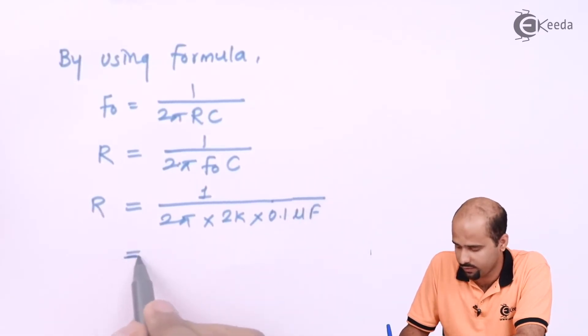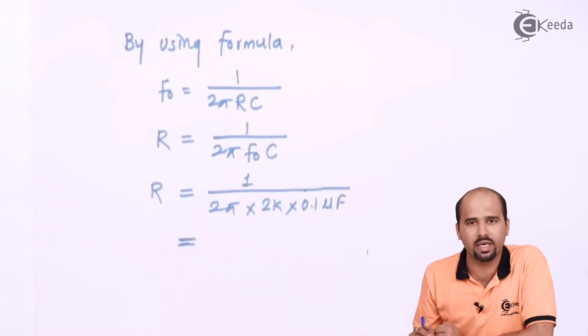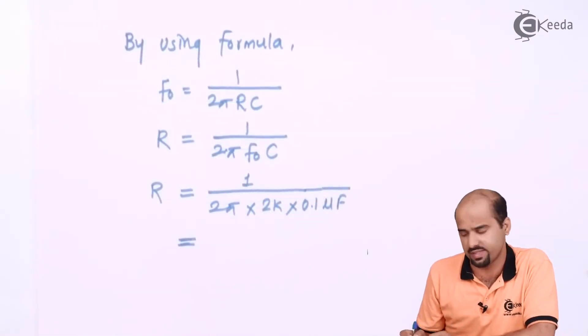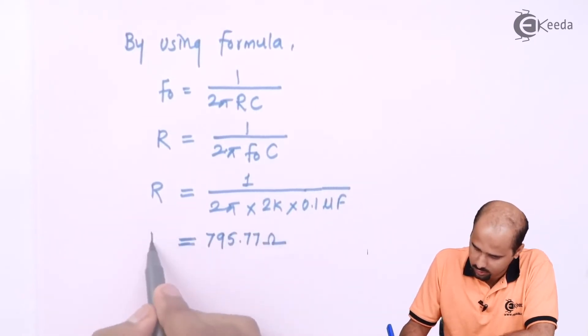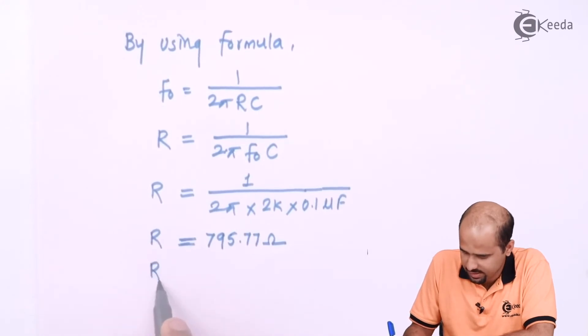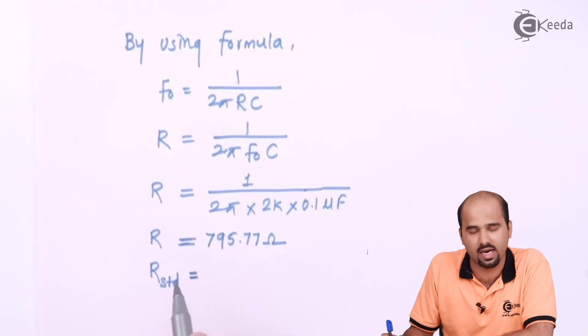Value will be getting 795.77, so R is nothing but 795.77 ohm. And we will set this as a standard value. Why I am forming a standard value - this is because 795.77 ka resistance market mein available nahi hoga.